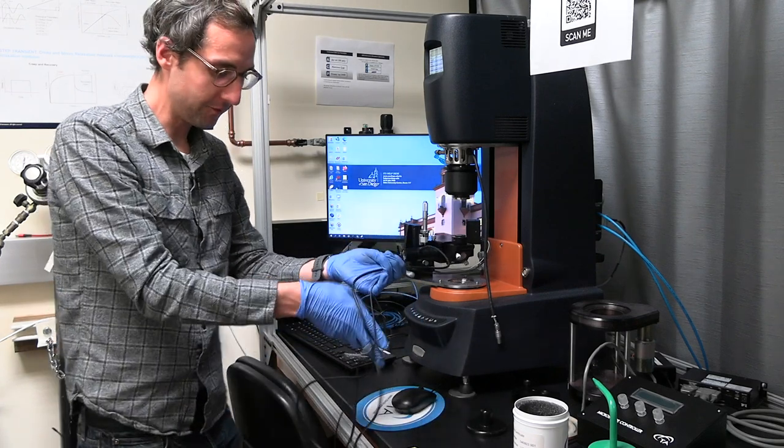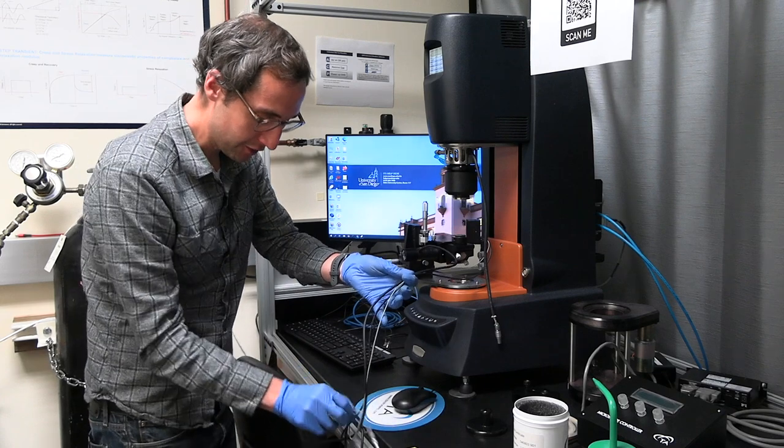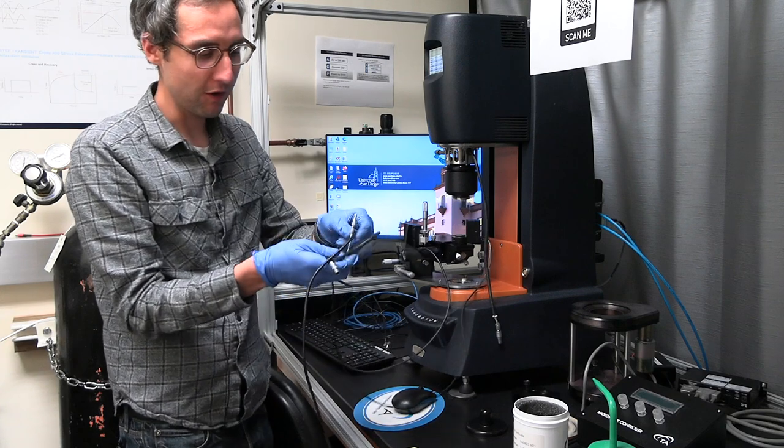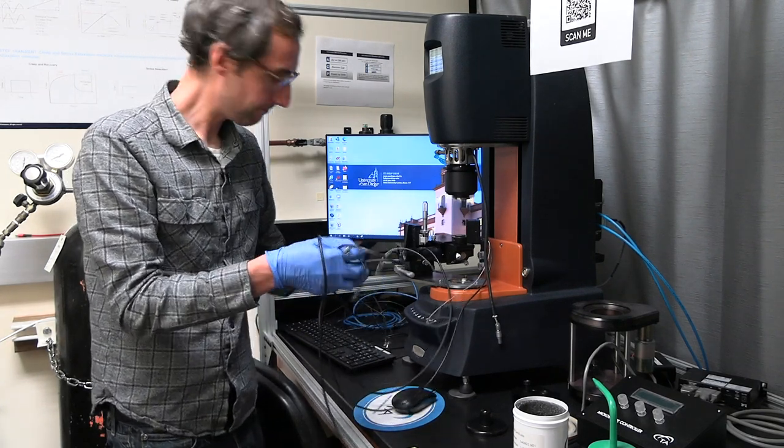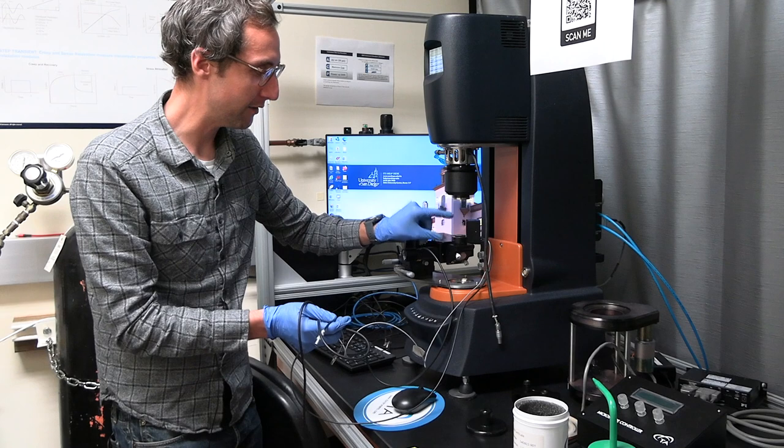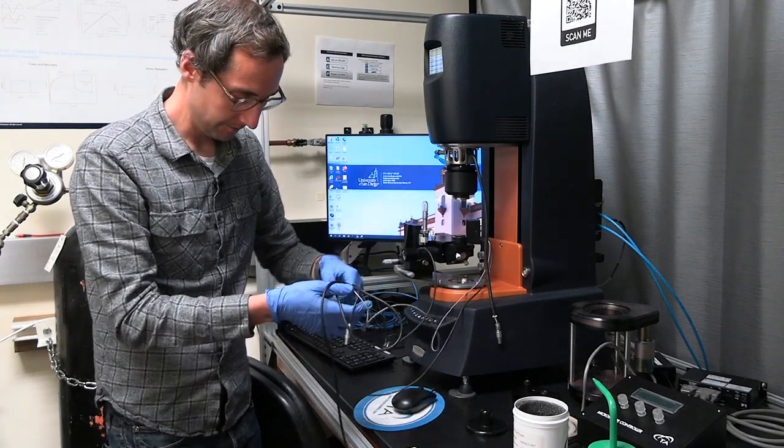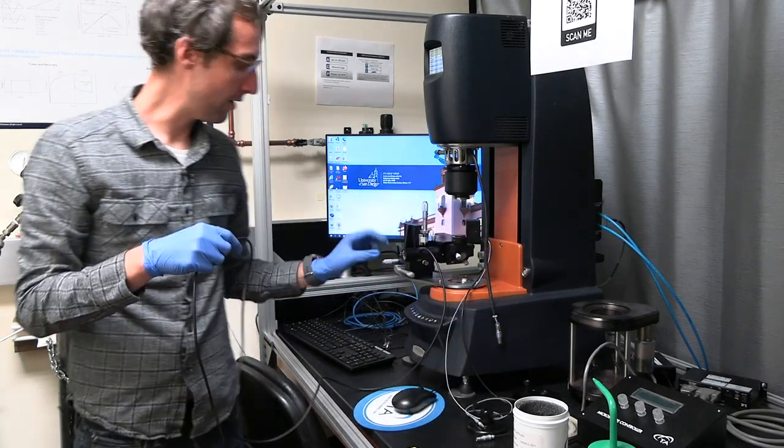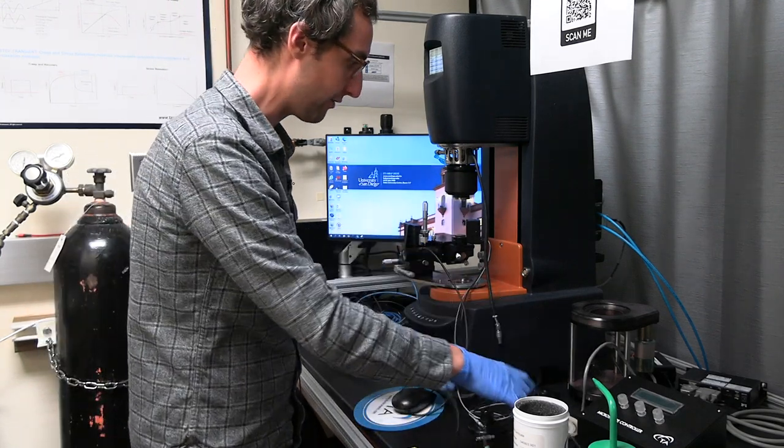So from this microscope attachment, we have these three cables. Two are for the piezo, the objective piezo mount, which will move the objective up and down over a range of 100 microns. And then the longer cord is the power cord for the LED, which we use for the illumination. I'm just going to put these on the side for now.